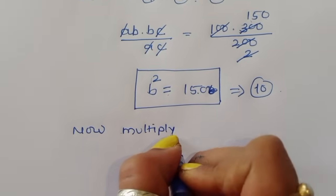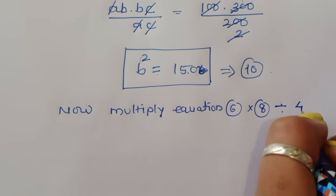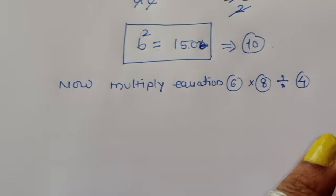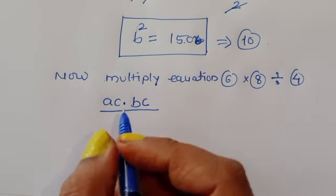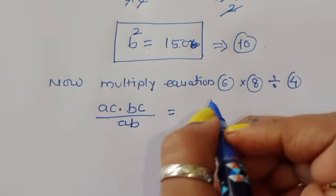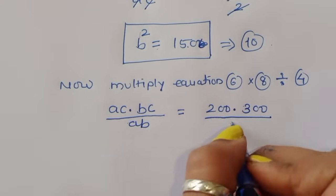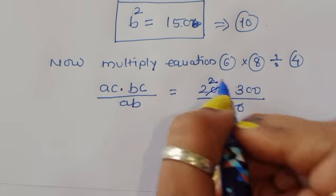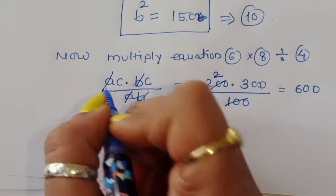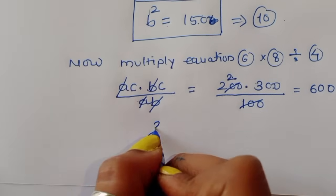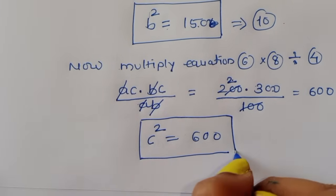Now multiplying equation 6 (AC) times equation 8 (BC) divided by equation 4 (AB): AC times BC divided by AB equals 200 times 300 divided by 100, which gives 600. The A and B terms cancel, leaving C squared equal to 600. This is equation number 11.